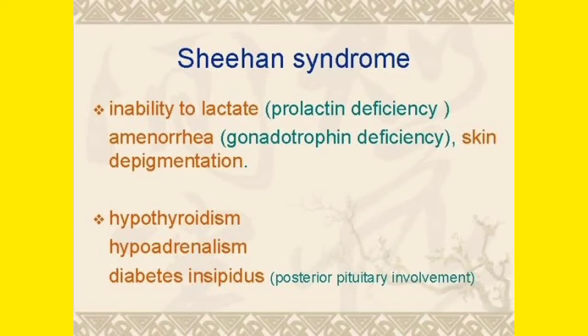These two hormones — prolactin and gonadotropins — are deficient because they are produced in the pituitary gland, which is now necrosed due to excessive blood loss during childbirth. So the patient suffering from Sheehan syndrome cannot lactate properly and cannot menstruate properly.